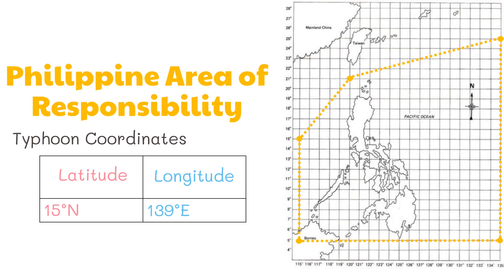So let's try this example: if a typhoon is located at 15 degrees north and 139 degrees east, is it within the Philippine Area of Responsibility? 15 degrees north is right here, however 139 degrees east is not even within the Philippine Area of Responsibility. Thus this typhoon hasn't entered or is not within the Philippine Area of Responsibility yet.